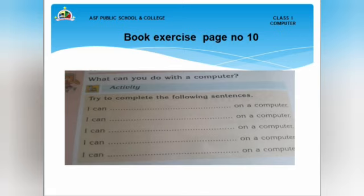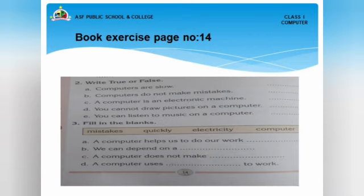The next activity is True or False on page number 14. The first statement: Computers are slow — no, computers are very fast, so this is false. The next statement: Computers do not make mistakes — yes, as we read in our chapter, a computer never makes mistakes, so this is true. A computer is an electronic machine — yes, we know a computer is an electronic machine, so this is true.